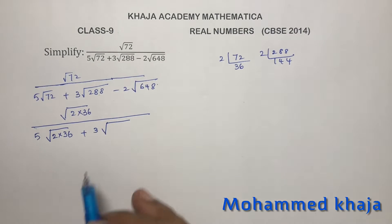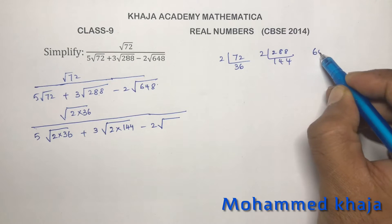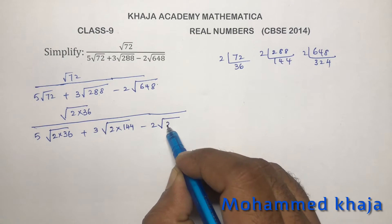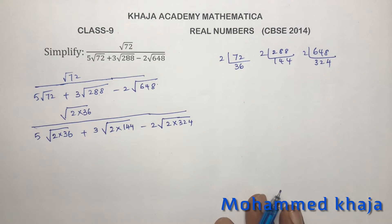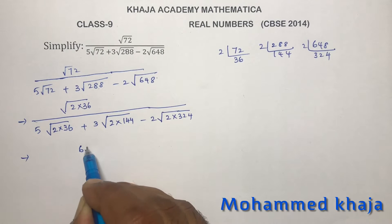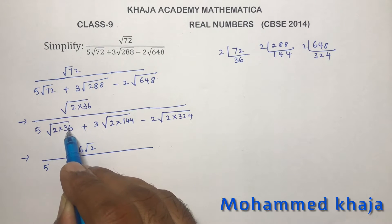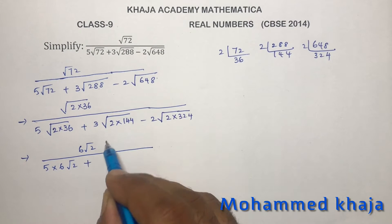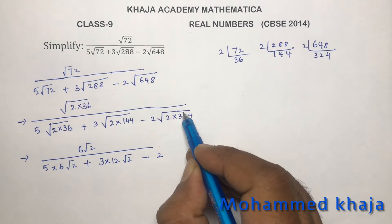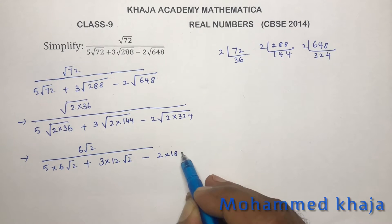For 3√288, prime factors give 2 × 144. Since 144 is a perfect square (12²), you write √288 as √(2 × 144). For 2√648, prime factors give 2 × 324. Since 324 is a perfect square (18²), you write √648 as √(2 × 324). So √36 = 6, √144 = 12, and √324 = 18. The numerator becomes 6√2.